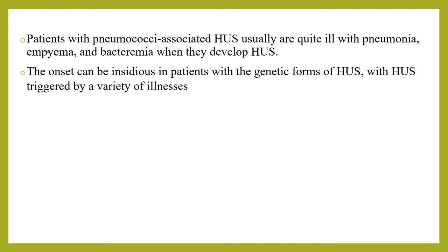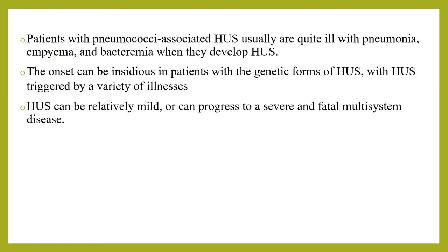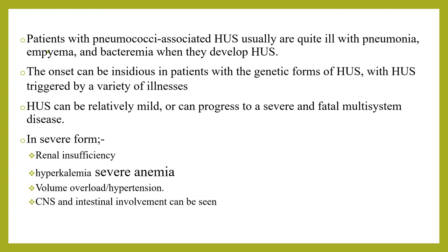Patients with pneumococcus-associated HUS usually are quite ill with pneumonia, empyema, and bacteremia when they develop HUS. The onset can be insidious in patients with genetic forms of HUS, triggered by a variety of illnesses including mild GI or respiratory infections. HUS can be relatively mild or it can progress to severe and fatal multisystemic disease. Leukocytosis, severe prodromal enteritis, hyponatremia, and antibiotic use portend a severe course, but no presenting features reliably predict the severity of HUS in any given patient. Patients with HUS who appear mildly affected at presentation can rapidly develop severe multisystem life-threatening complications.